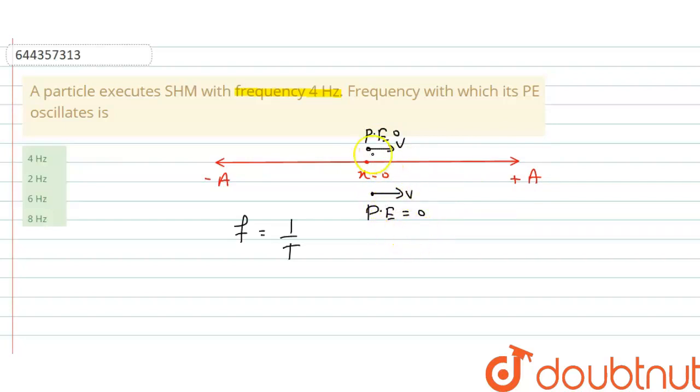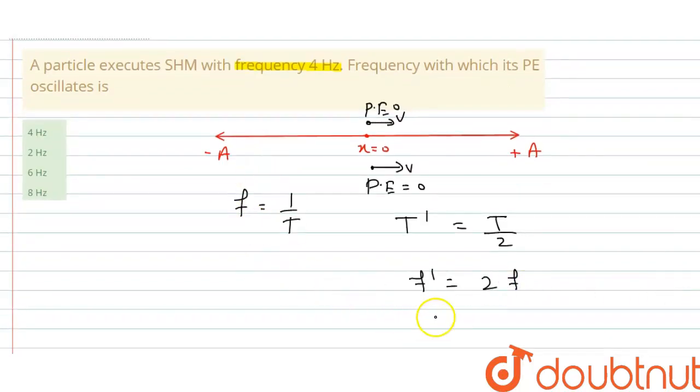So time period of oscillation of potential energy is half the time period of SHM. Time period of oscillation of potential energy is T dash, so it will be equal to T by 2. That means time period is half. Frequency is inversely proportional to the time period, so if time period is half, that means frequency is 2 times frequency of SHM. So correct option is 2 times 4. Frequency of SHM is 4, so this will be equal to 8 hertz. Correct option is 8 hertz. I hope you have understood the explanation. Thank you.